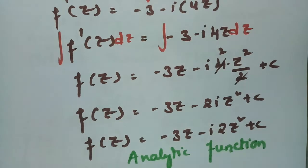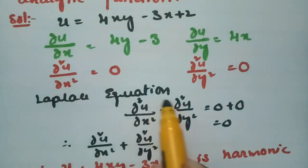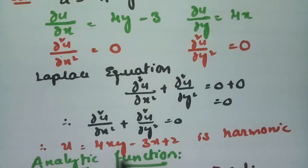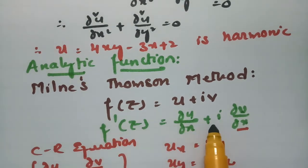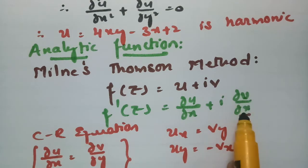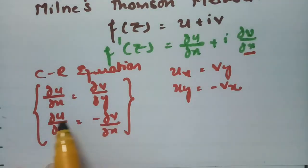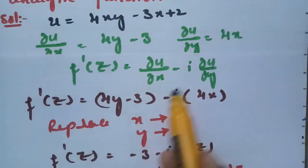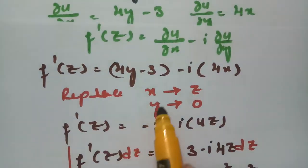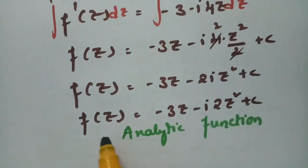To summarize: u was given, so we took the double derivative with respect to x and y, substituted into the Laplace equation, and since it satisfied the equation, u is harmonic. For the analytic function, using the Milne-Thompson method, f(z) = u + iv; differentiating and applying CR equations to replace ∂v/∂x with -∂u/∂y, substituting x = z and y = 0, then integrating, we got f(z) = -3z - 2iz² + c as the required analytic function.